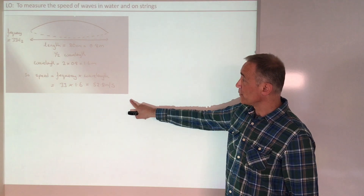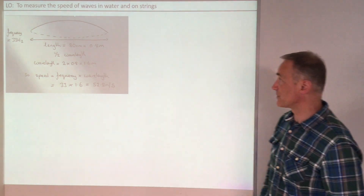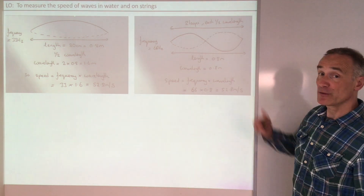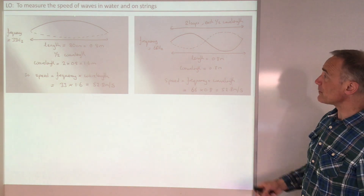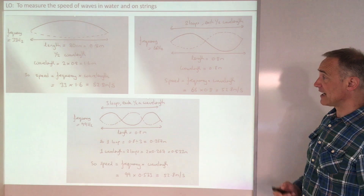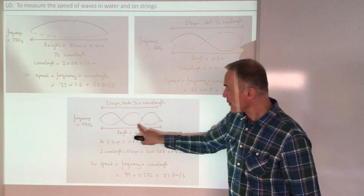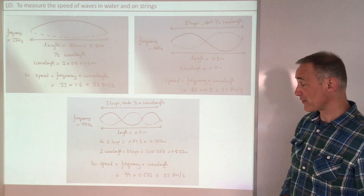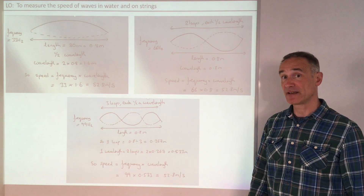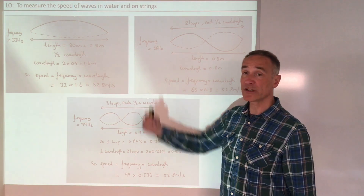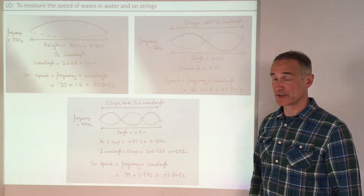With one loop we had half a wavelength and got 52.8 metres per second. With two loops — a whole wavelength — we doubled the frequency and still got the same speed. With three loops we tripled the frequency and got one and a half wavelengths, and of course whichever we do we get the same speed. In your exam they might draw one, two, or three loops.